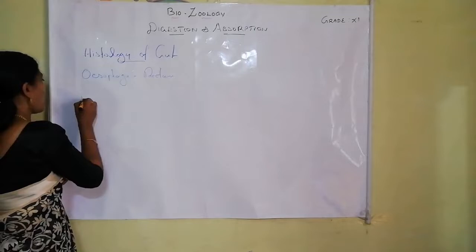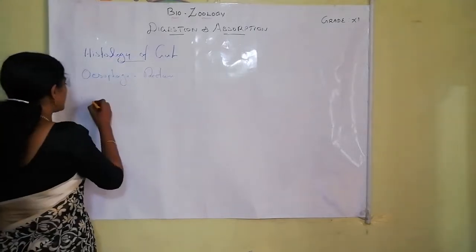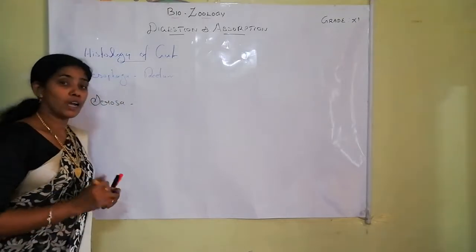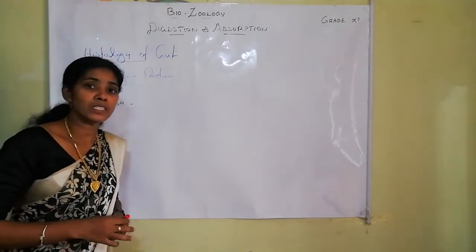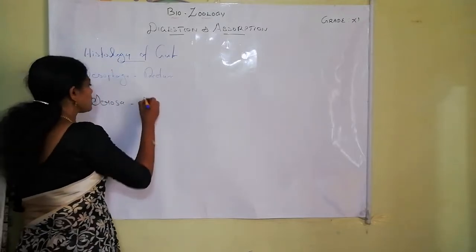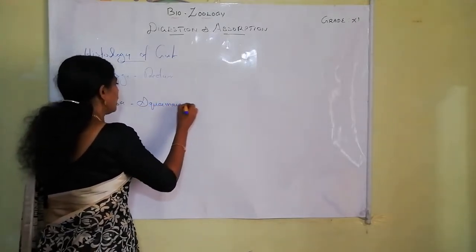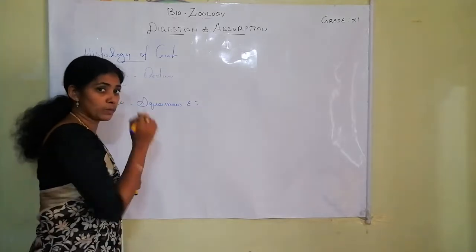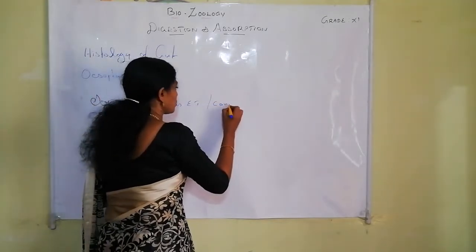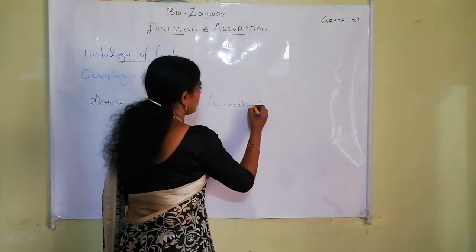The outermost layer of this gut is called serosa. This serosa is made up of squamous epithelial tissue.